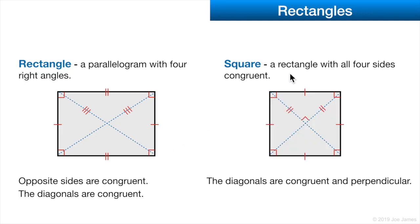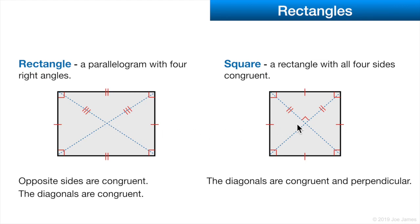A square is a special rectangle where all four sides are congruent — the same length. Squares have one other unique feature: the diagonals are both congruent and perpendicular. In a rectangle, the diagonals are congruent but not perpendicular. In a square, the diagonals intersect at a right angle.